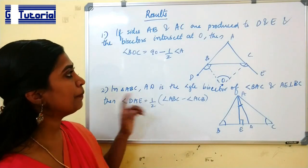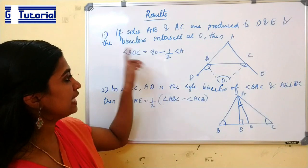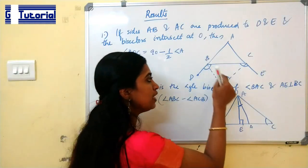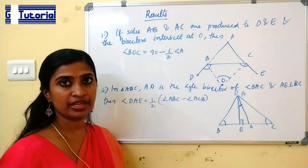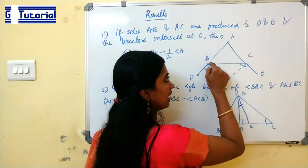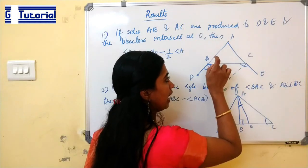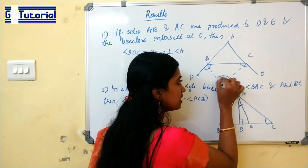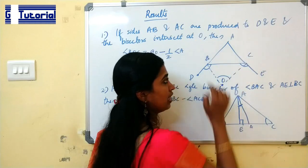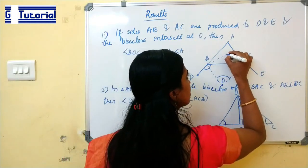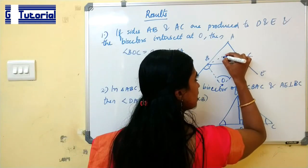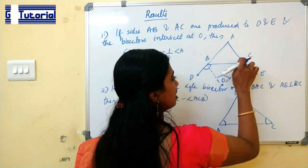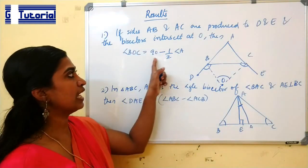Now let us study some important theorems. If the sides AB and AC are produced to D and E, and the bisectors of these exterior angles meet at point O, then the angle BOC is given by 90 degrees minus half of angle A. For the incenter, where the interior angle bisectors meet, the angle is 90 degrees plus half the angle; when bisecting the exterior angle, it is 90 degrees minus half the angle.